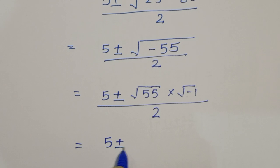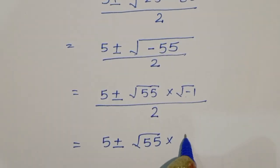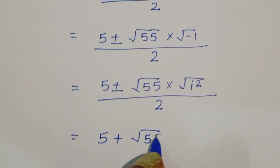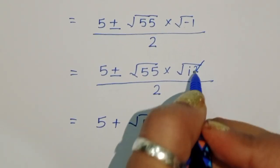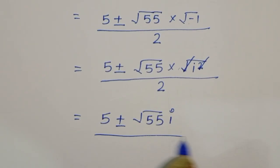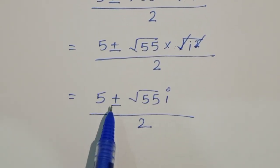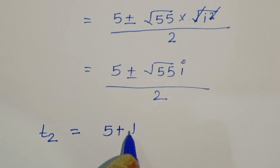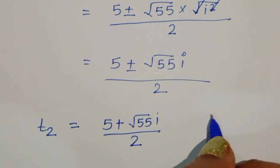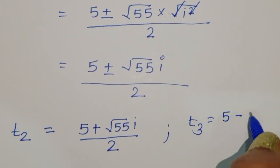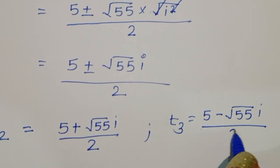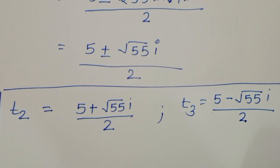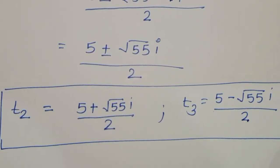We can write square root of minus 55 as square root of 55 times square root of minus 1, where square root of minus 1 equals i. So the solutions are: t₂ equals (5 plus √55 · i) divided by 2, and t₃ equals (5 minus √55 · i) divided by 2. These are imaginary solutions. The real solution to verify is t₁ equals minus 4.